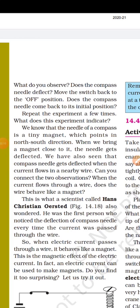We know that the needle of compass is a tiny magnet which points in the north-south direction. When we bring a magnet close to it, the needle gets deflected. We have also seen that the compass needle gets deflected when the current flows in a nearby wire. Can you connect the two observations? When the current flows through the wire, does the wire behave like a magnet?